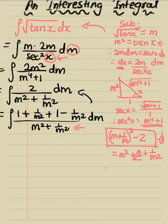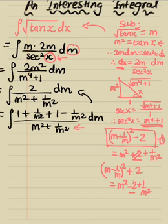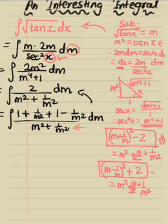Let's also try (m − 1/m)² = m² − 2 + 1/m². This is almost equal to the denominator except for the extra negative 2, so adding 2 to both sides gives (m − 1/m)² + 2, which also equals our denominator. I'll call the first result equation 1 and the second equation 2.